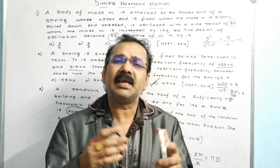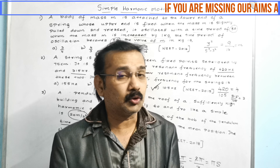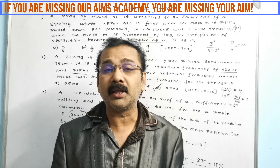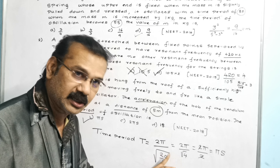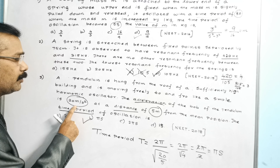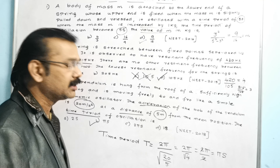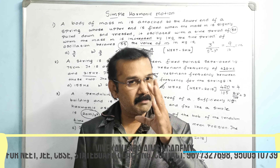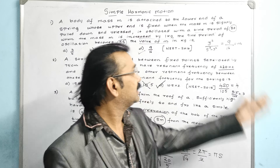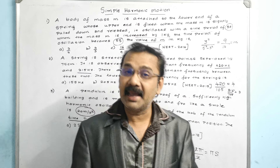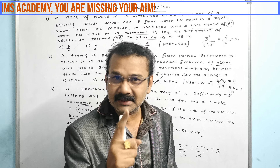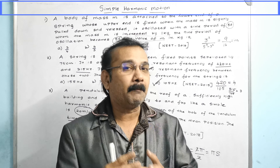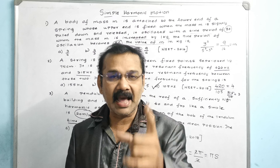We got the answer immediately without using any formula — only the cheat code 2π. For any Simple Harmonic Motion question asking for the time period when acceleration and distance are given: put T = 2π times root of (distance divided by acceleration) and you get the answer immediately. I hope you enjoyed these three magical tricks asked in NEET 2016, 2015, and 2018 respectively. Practice by changing different numbers and you will get the answer immediately.